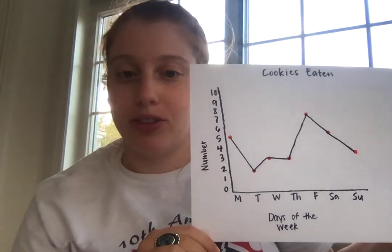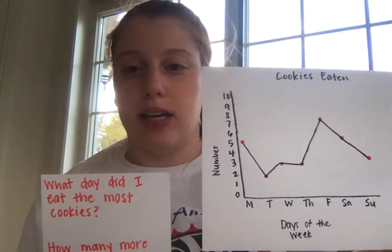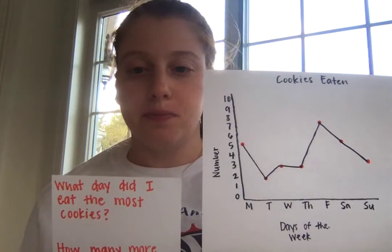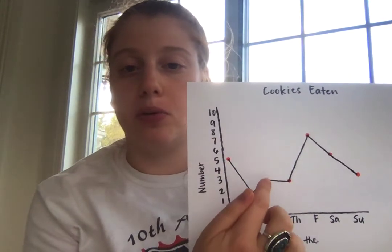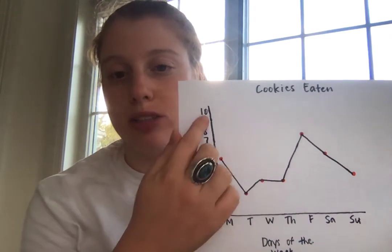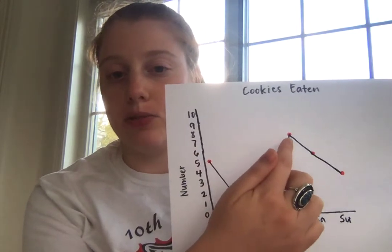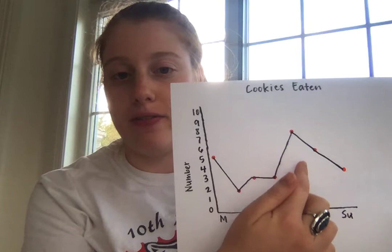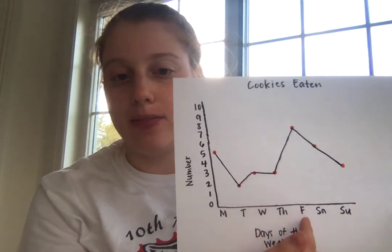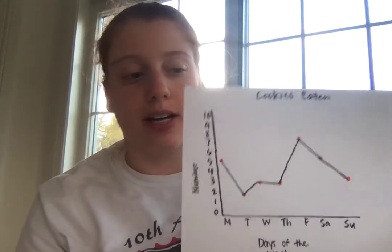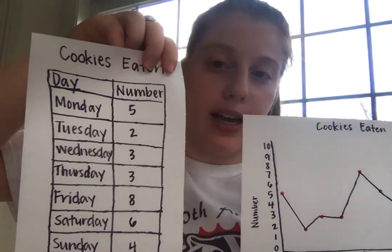Now we're going to answer some questions about this line graph. The first question says: what day did I eat the most cookies? We know that when we look at a line graph, whichever point is the highest, that's the most because it goes to the highest number. So I see the highest point is right here. I'm going to follow it down and it looks like on Friday I ate the most cookies — I ate eight cookies on Friday. If we look at our data table, that matches.